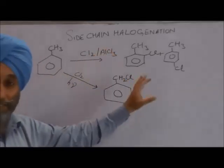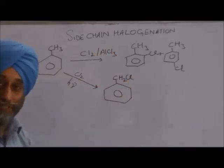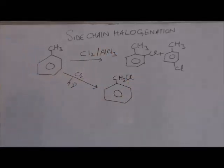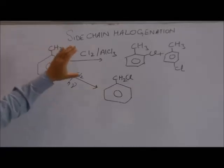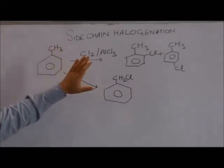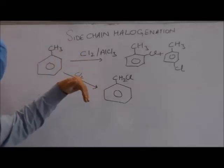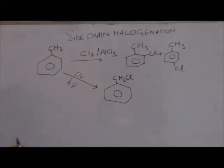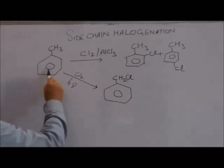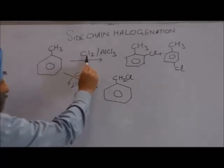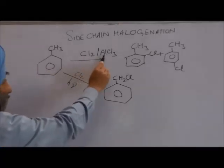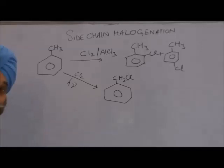We will be discussing side chain halogenation today. Look at toluene. When we react toluene with chlorine in the presence of AlCl₃, the reaction of toluene with chlorine in the presence of AlCl₃ proceeds as follows.